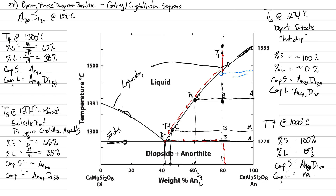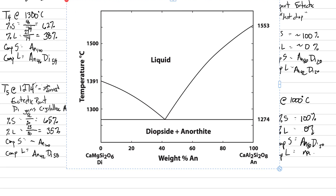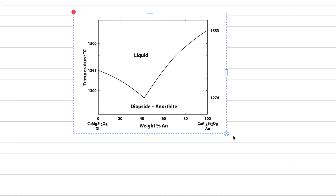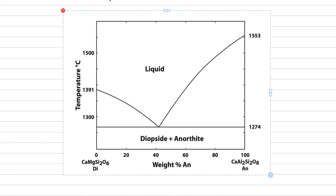We've been walking through the binary phase diagram of the crystallization sequence of a basaltic magma, going from high temperature to low temperature and crystallizing anorthite until we reach the eutectic. We can use this exact same phase diagram to explain how a rock would melt as temperature increases for any composition along the diopside to anorthite solid solution. What I'd like to do is walk you through that briefly right now, qualitatively, before we go on to the actual content of today's lecture.